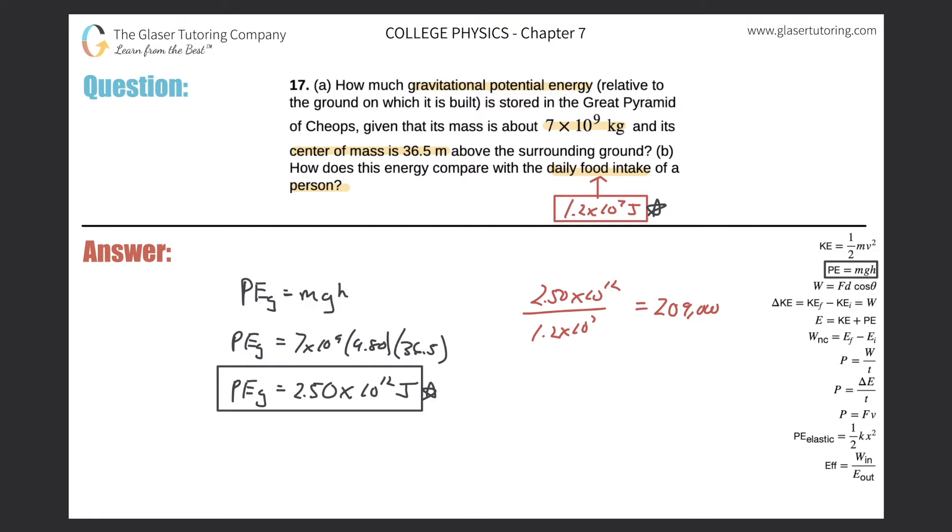Now what would be the units here? Well, think about what we just found. This would be 209,000, like, person days, right? Person days of food intake. It would be 209,000 days because this is the daily food intake, and it's the daily food intake of a person.